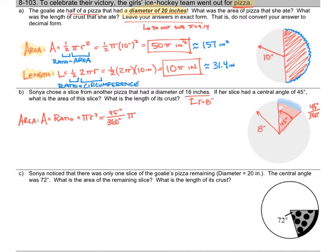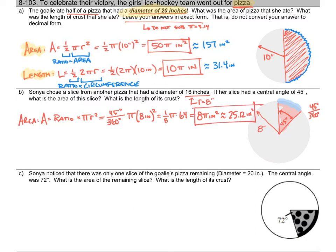So I multiply 45/360 by π times 8 inches squared. You might recognize 45 out of 360 is just one-eighth. So I have one-eighth times π times 64. One-eighth times 64 is 8, so the exact answer is 8π square inches. If I multiply 8 by 3.14, I get about 25.12 square inches. That's the area of Sonia's slice — a little more reasonable than what the goalie did in the previous problem.